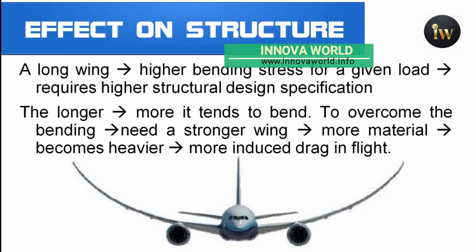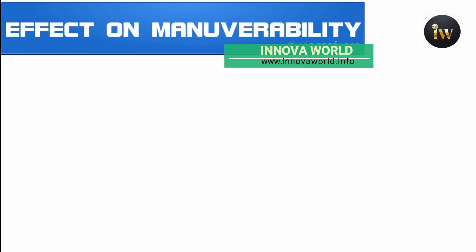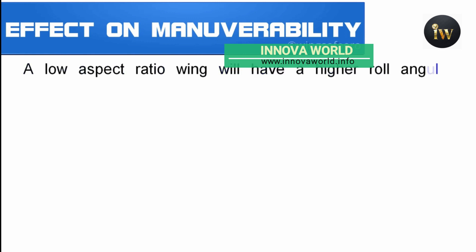The longer the wing, the more it tends to bend. To overcome the bending you need a stronger wing, which means more material. When more material is added to the wing it becomes heavier, which in turn produces more induced drag in flight. Eventually the structural needs of a high aspect ratio design outweigh the benefits.